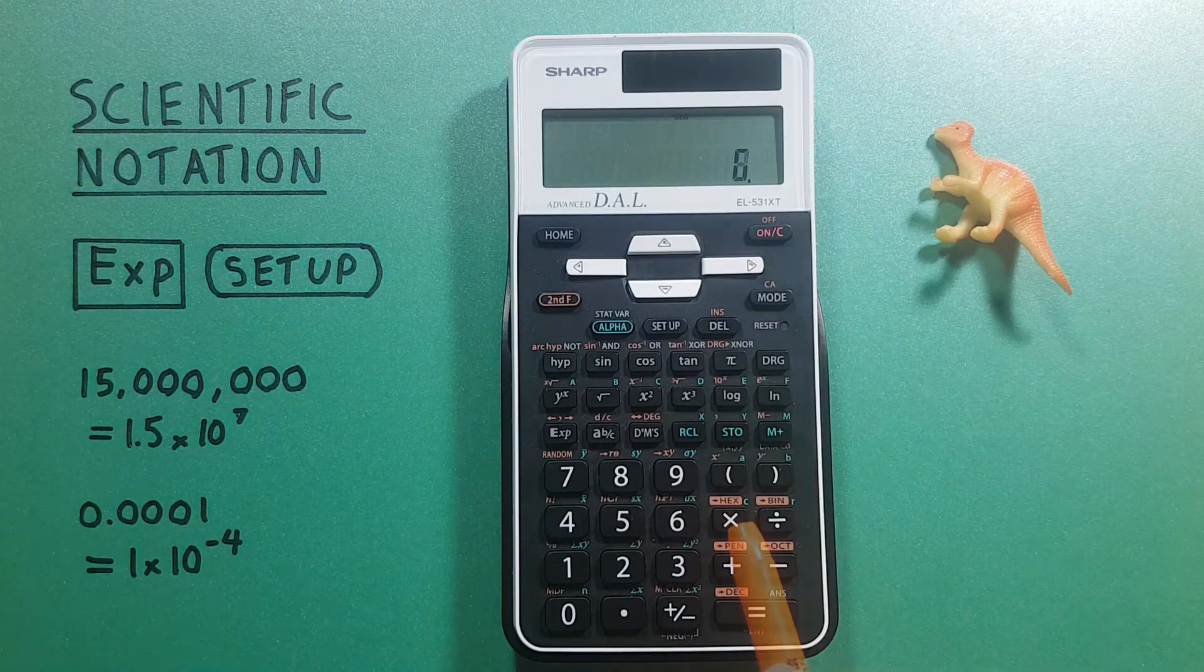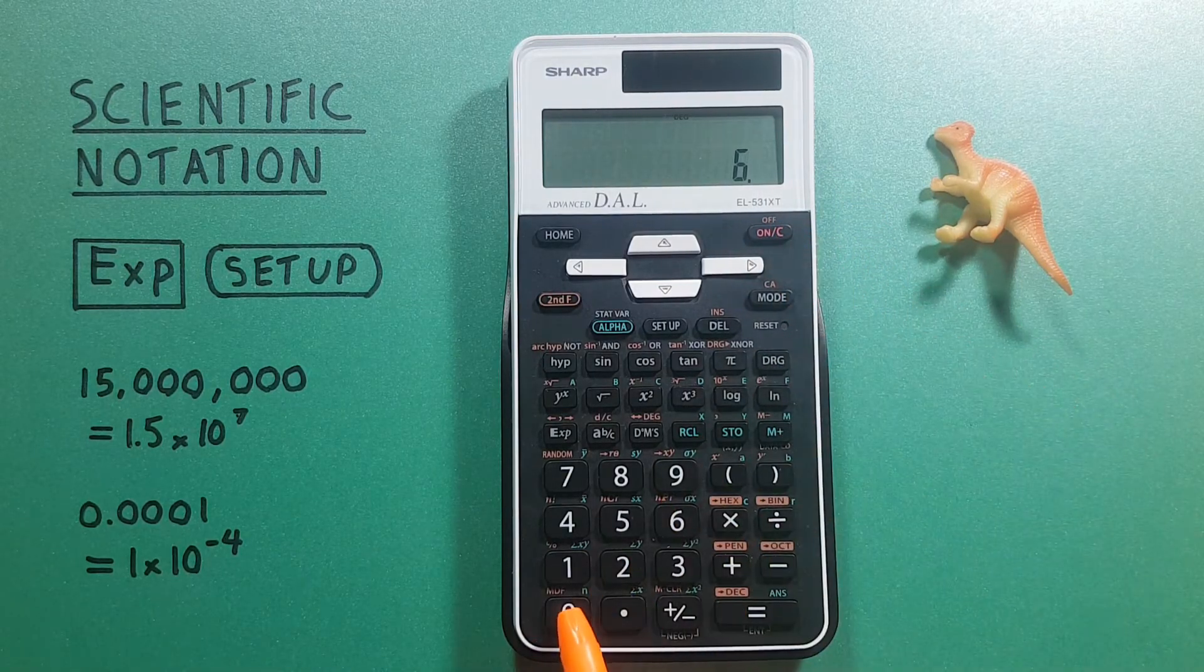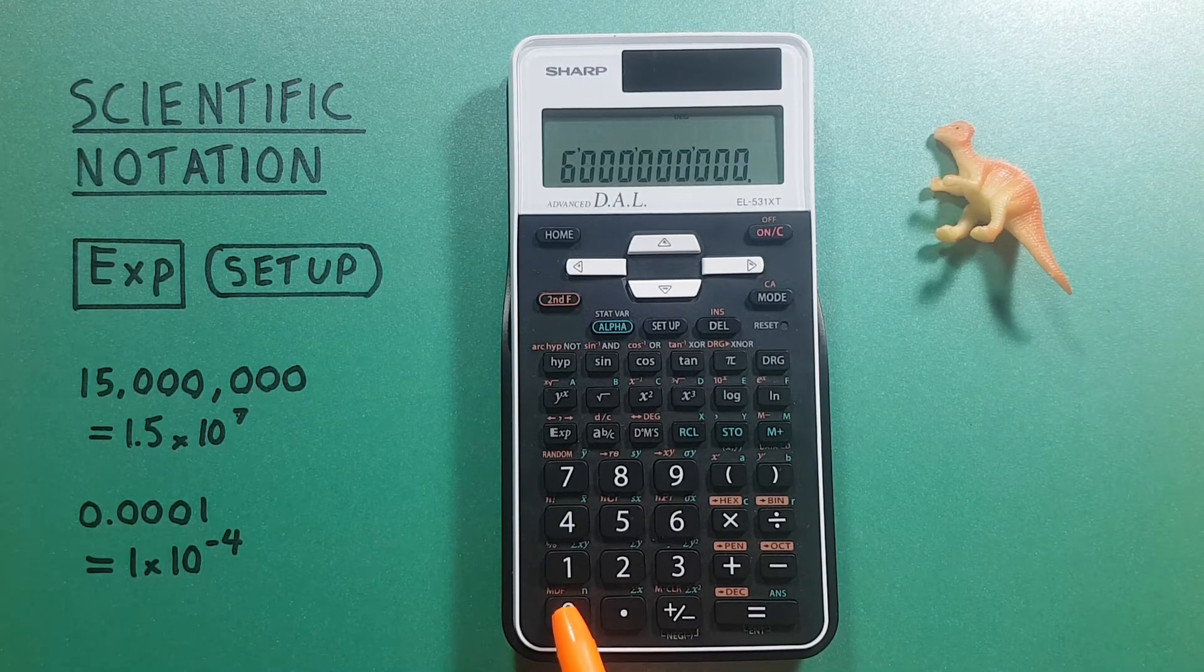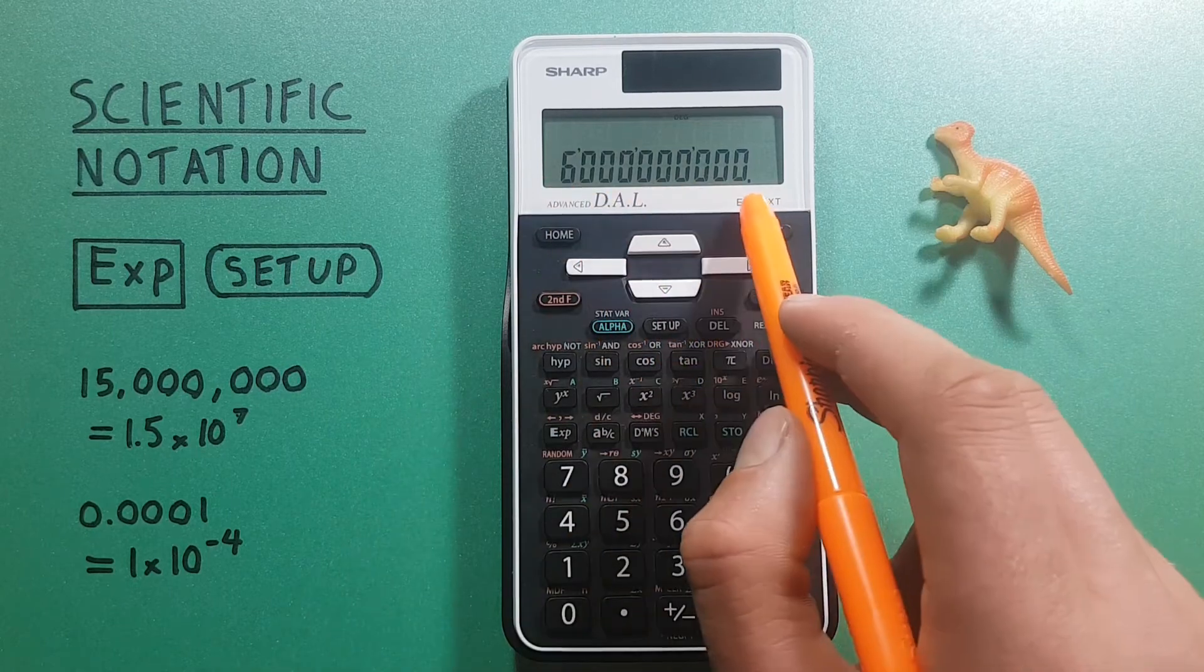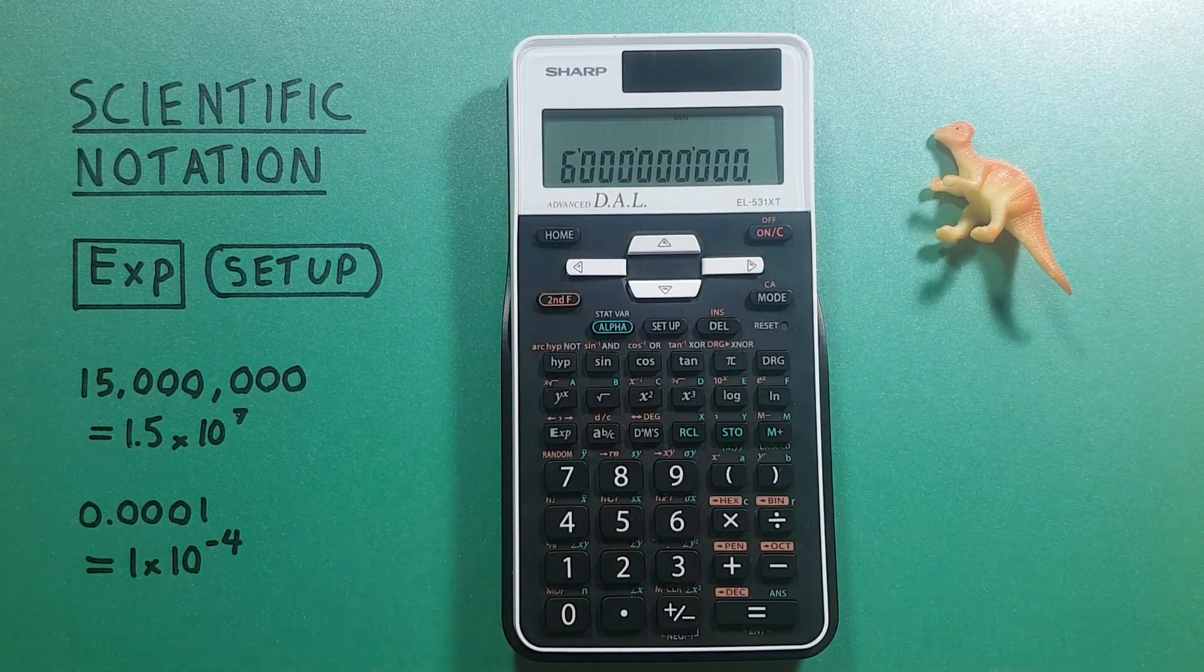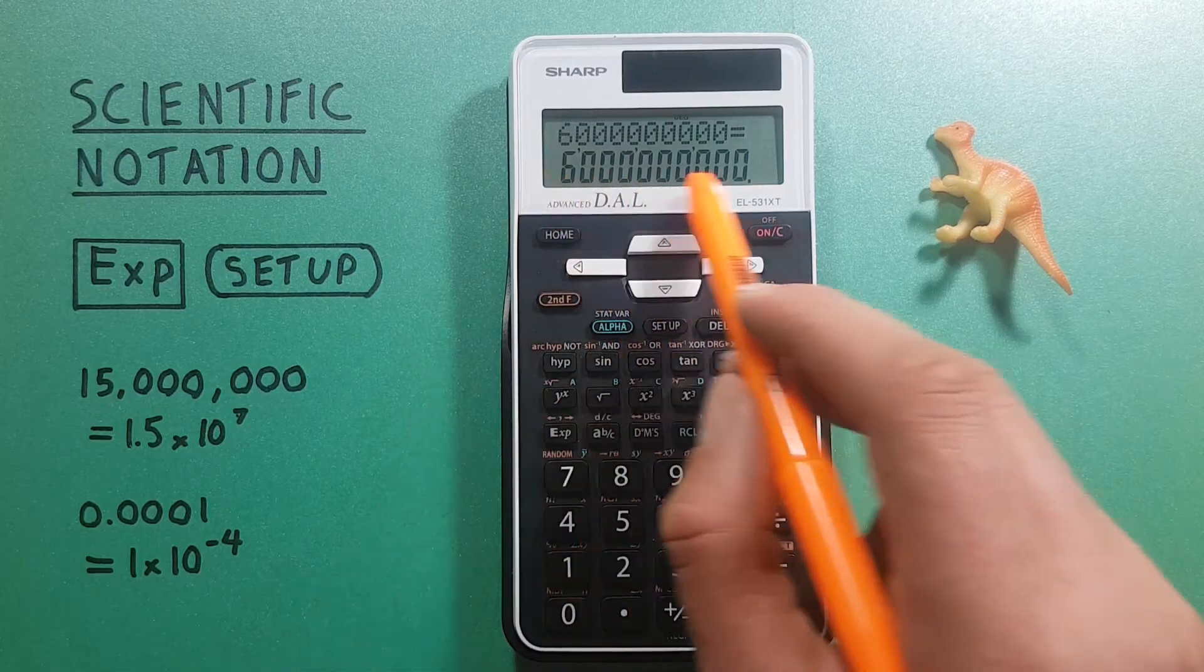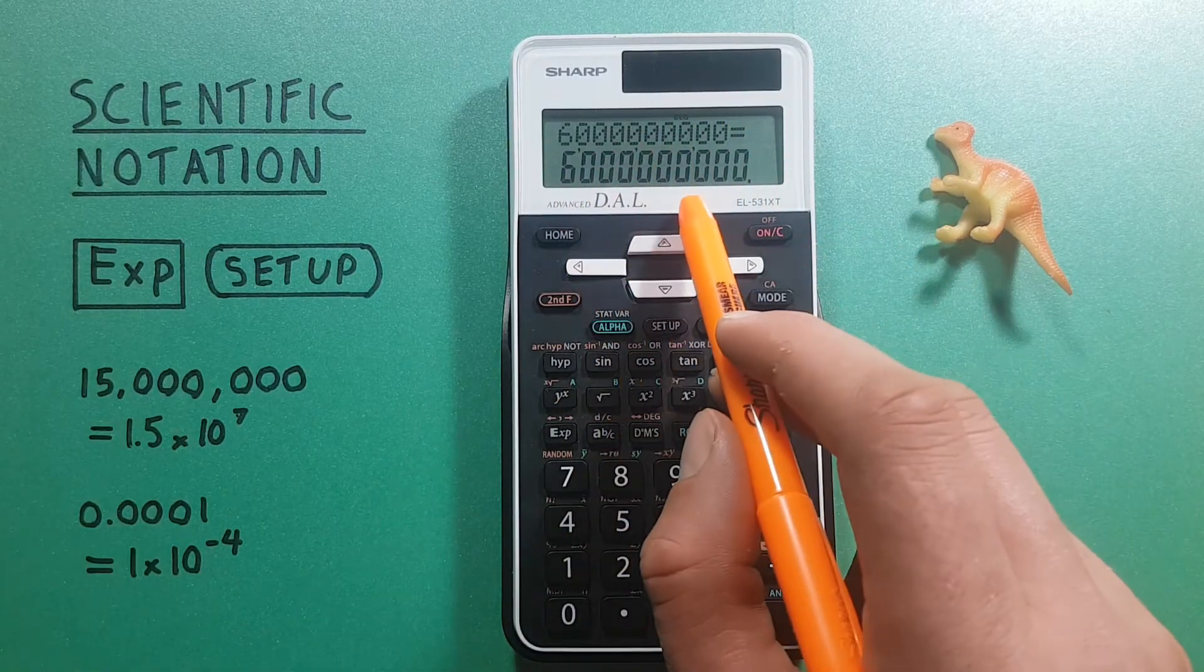How about a large number? Let's enter 6 billion, a number that uses all our digit slots here. Can't go any further. All our number options are used. What do we do? We press equals. It still says 6 billion because there's still room on here.